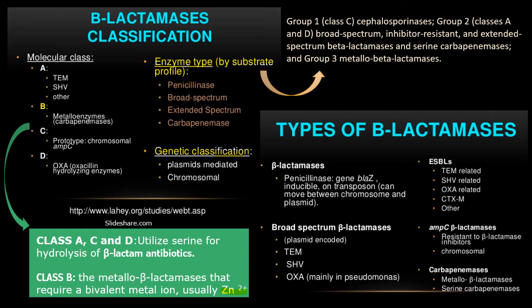The molecular classification is most widely used. Group 1, which is class C, are cephalosporinases. Group 2 is class A and D — that is broad spectrum, inhibitor-resistant, and extended spectrum beta-lactamases, as well as serine carbapenemase. Group 3 has metallo-beta-lactamases. So depending on substrate profile and enzyme activity, these enzyme types are further classified into groups 1, 2, and 3.